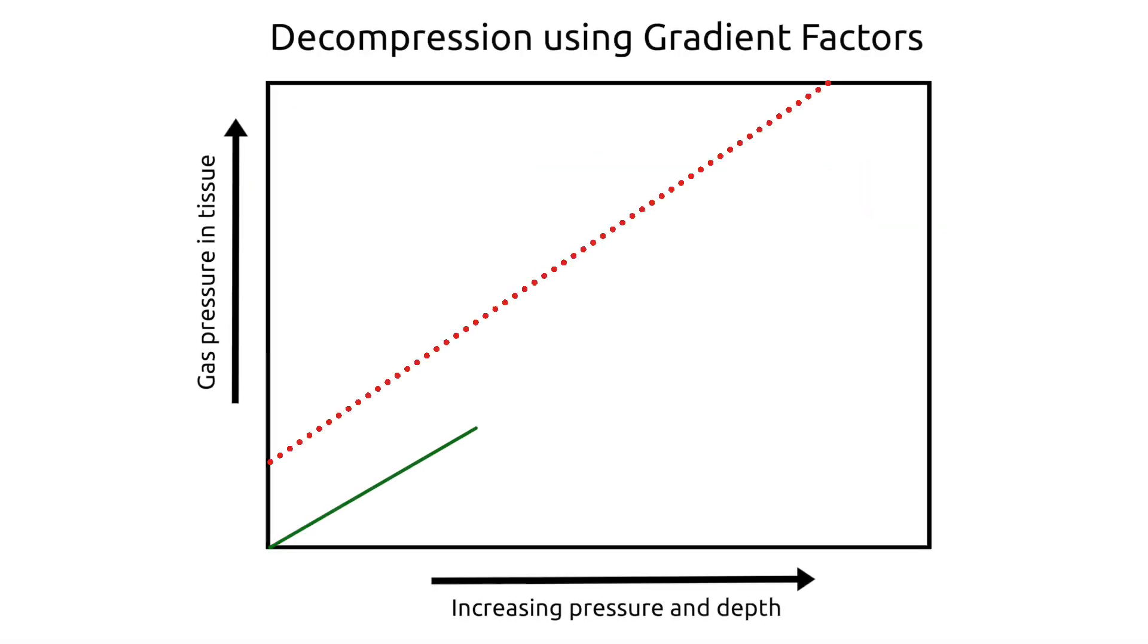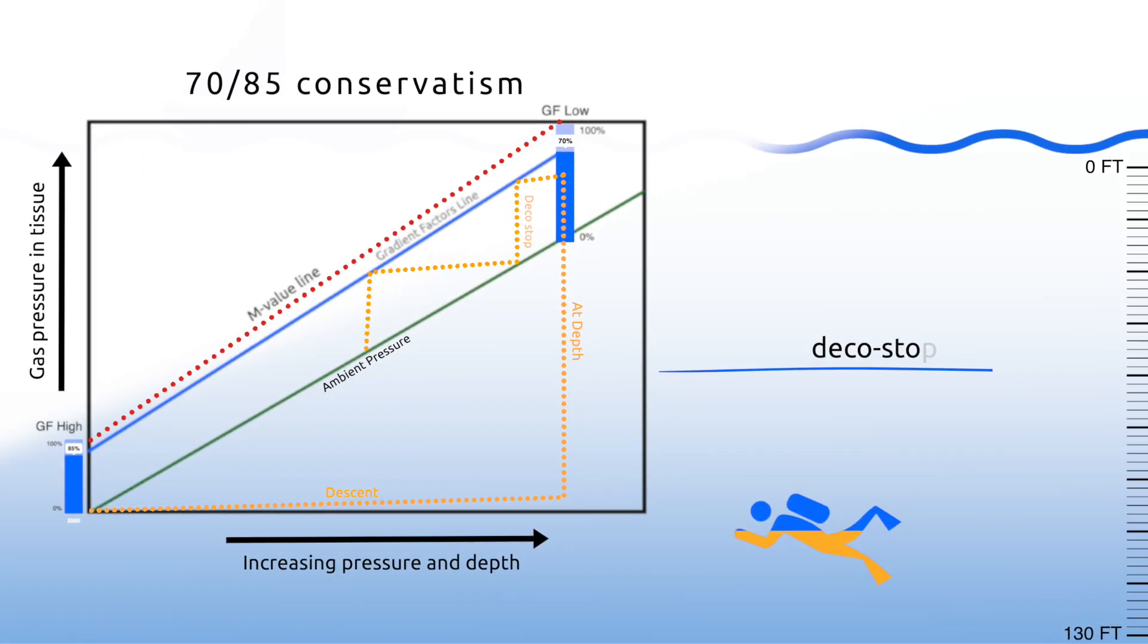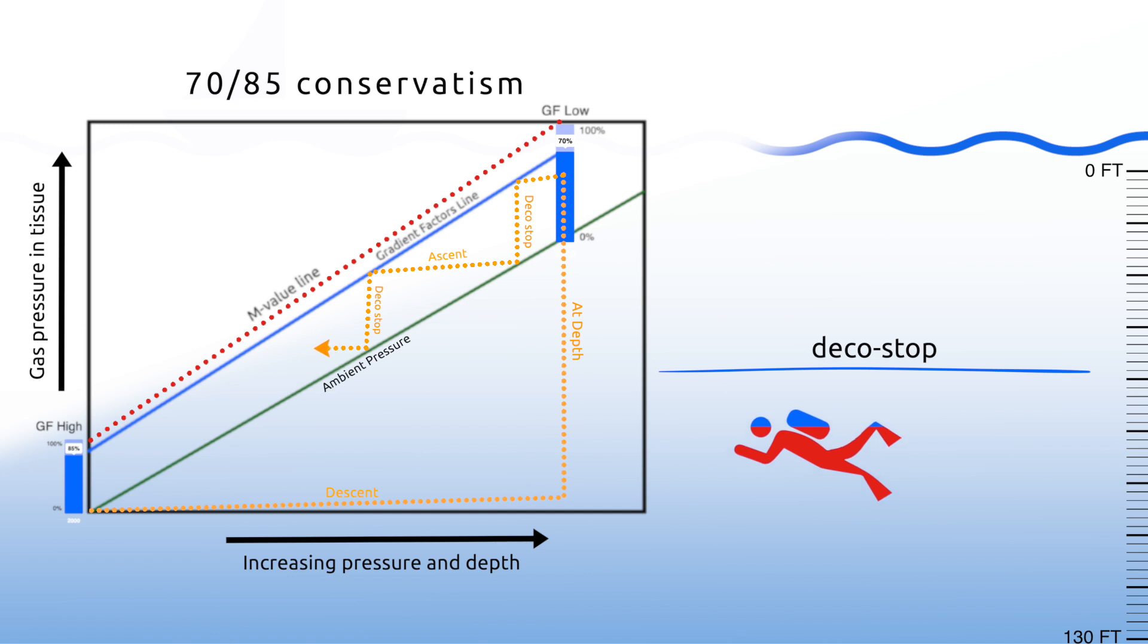To quickly understand what it means to use gradient factors, or GF, with a Buhlmann decompression model, you'll need to choose two numbers. First is the GF low and the second is the GF high. The first lower number is what controls the deeper stops or the depth of your deepest stops. So, if you choose the default 70-85 option, that means you can ascend until you develop tissue saturation of 70% of the allowable Buhlmann limit. That will become your first stop.